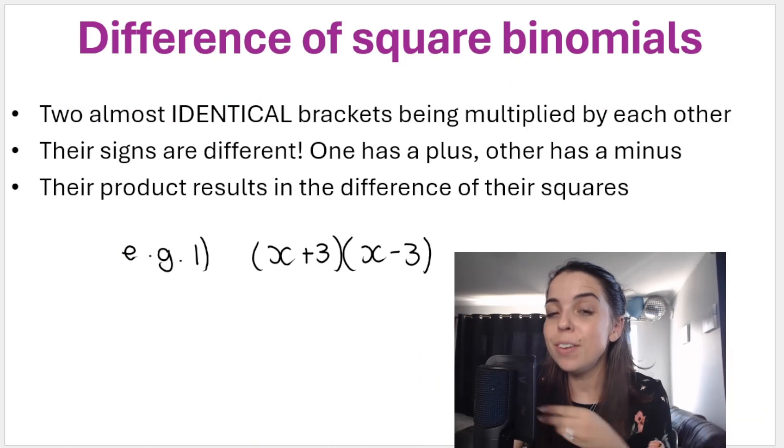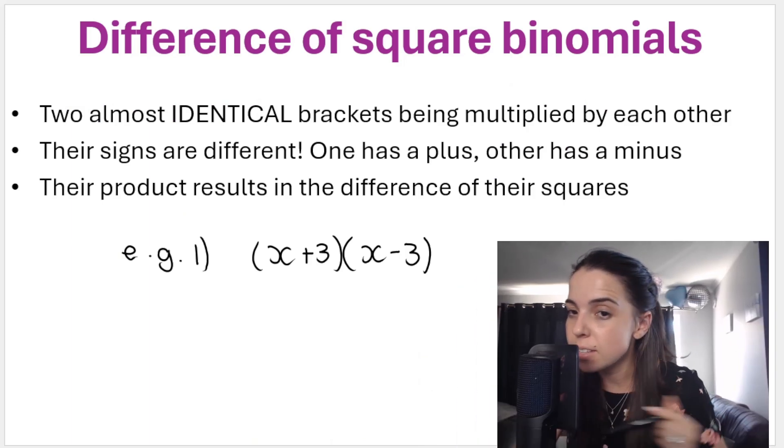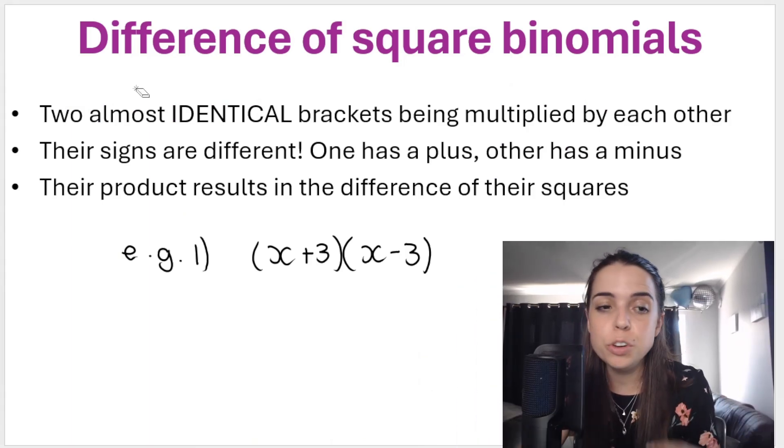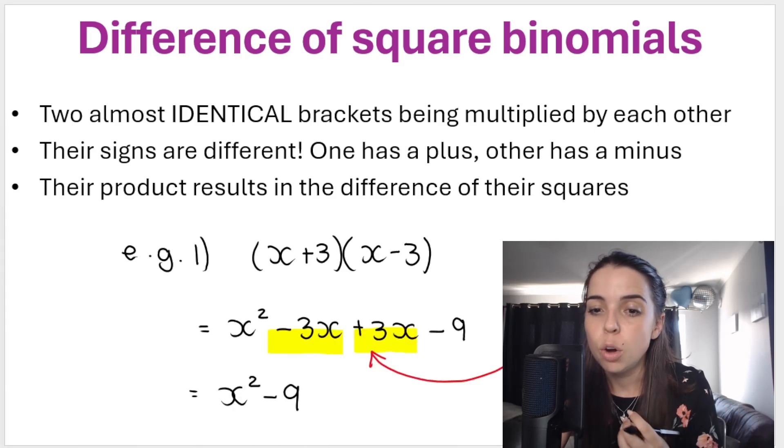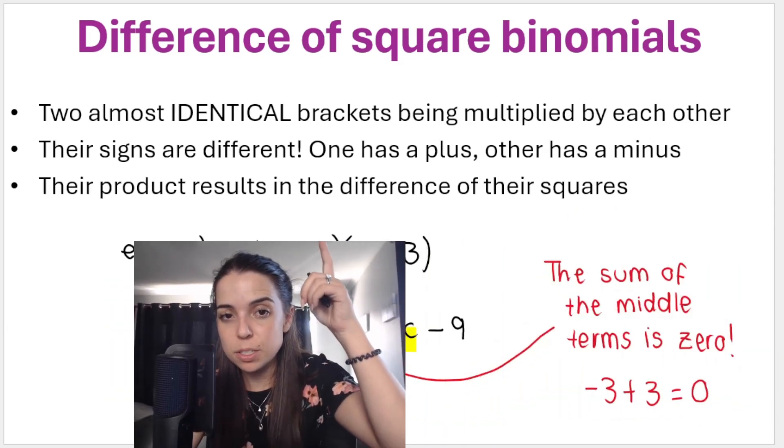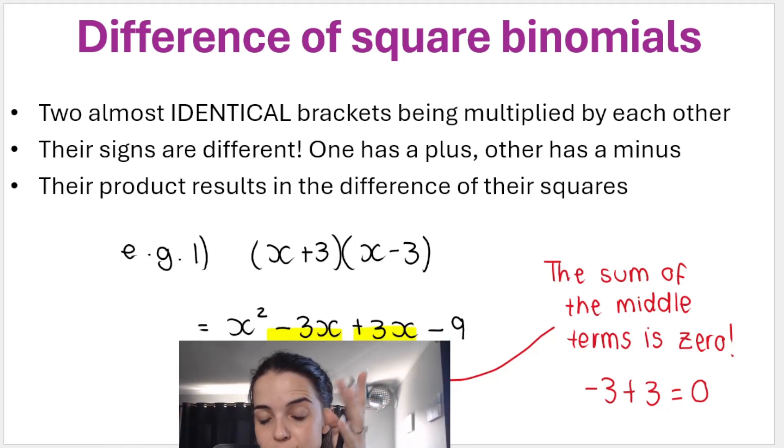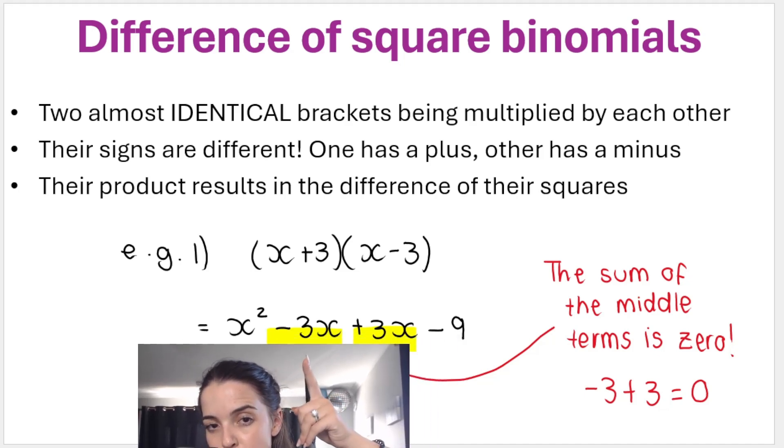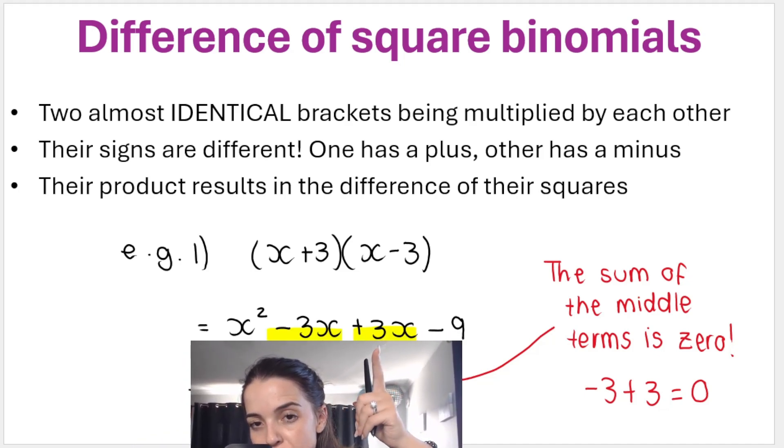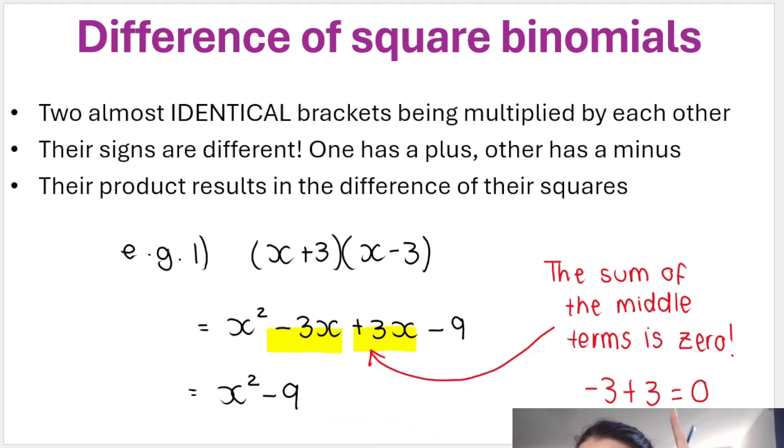So if I had to ask you to simplify this or expand this, something like that, then I hope you know that you can apply the foil method or everything in the first bracket multiplied by everything in the second bracket. So this is what we get. I hope you can see that the middle two terms here, negative 3x plus 3x. You owe someone three Rand, you pay them back three Rand. How much do you owe them? Zero.